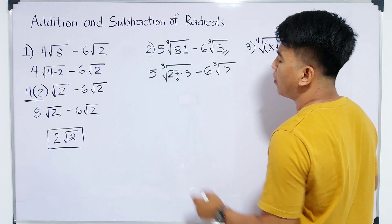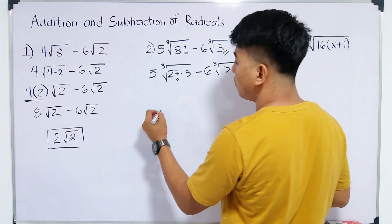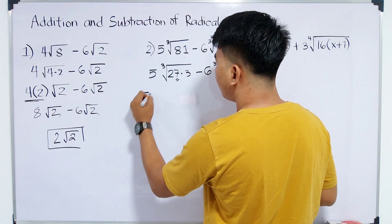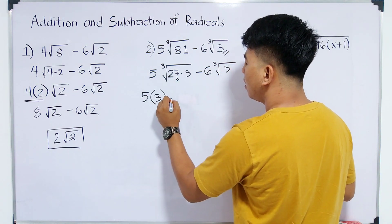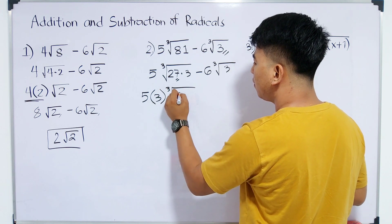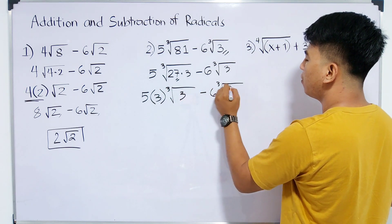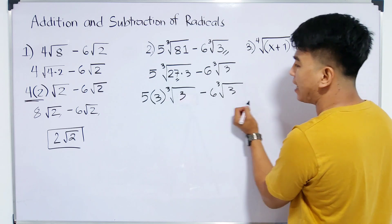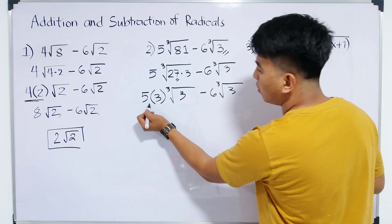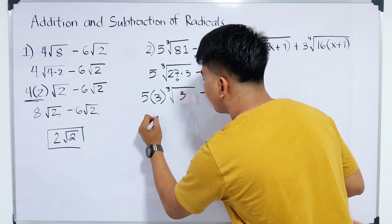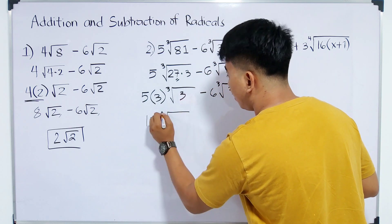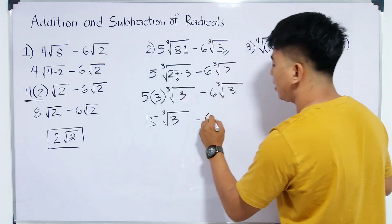Extracting the cube root of 27, it will give us the answer of 3. So we have now 5 times 3 times the cube root of 3 minus 6 times the cube root of 3. As you can see, we have the same radicand now.